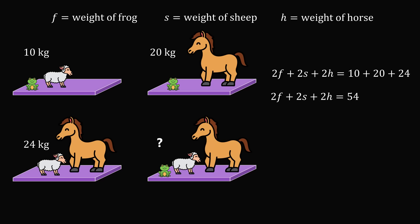In order to get the weight of 1 of each animal, we just divide 54 by 2, which gives 27 kilograms. So F plus S plus H is equal to 27 kilograms. And that's the answer.